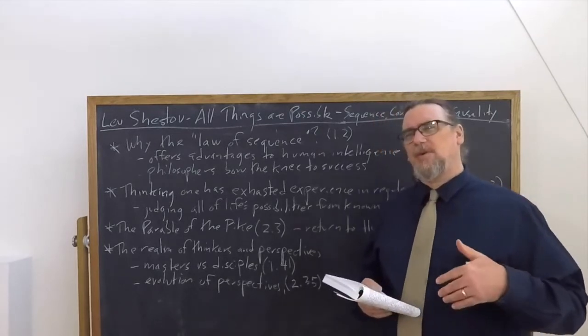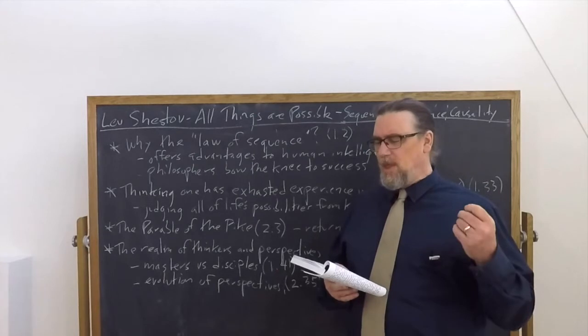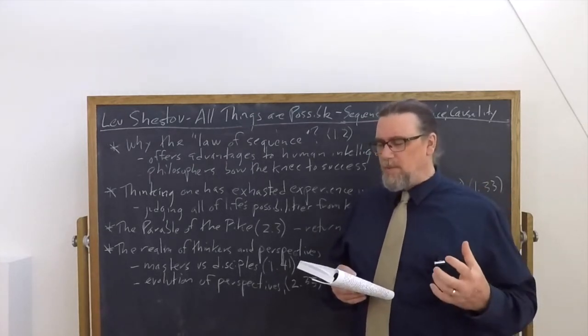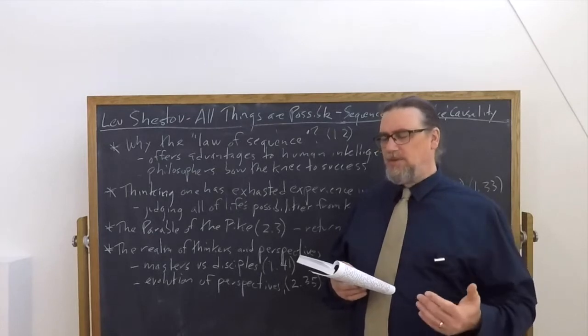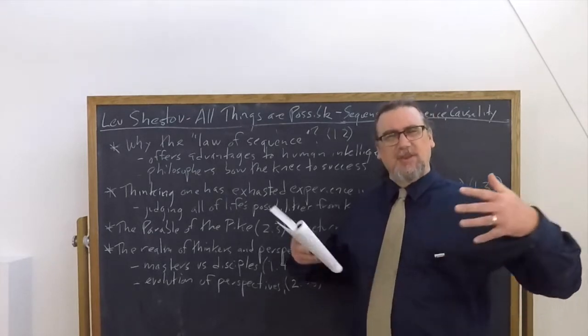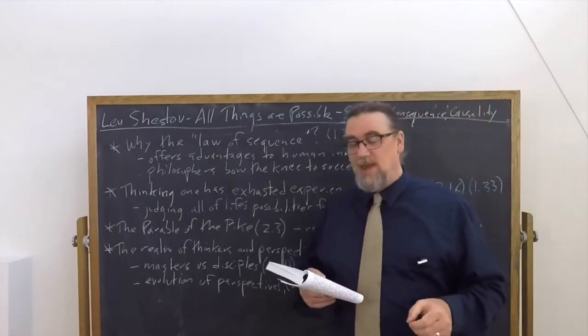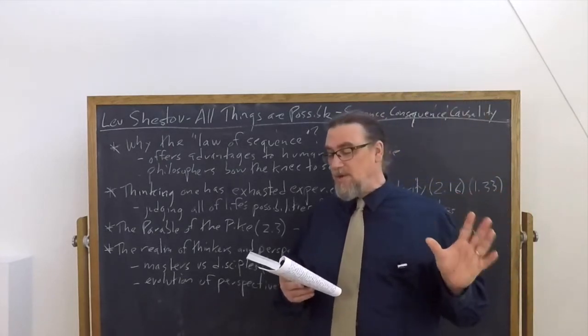And it's interesting. He follows this up in chapter three, says the comfortable, settled person says to themselves, how could one live without being sure of the morrow? How could one sleep without a roof over one's head? So this is like a way of being that has a regular sequence.